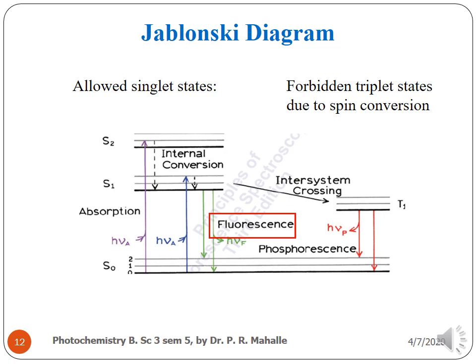In the Jablonski diagram, S0, S1, and S2 are the singlet states and T1 is the triplet state. Fluorescence and phosphorescence can be observed in the diagram, where the singlet state is converted to the triplet state by means of inter-system crossing (ISC).